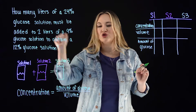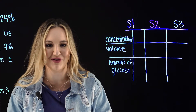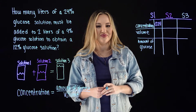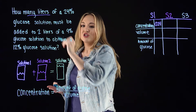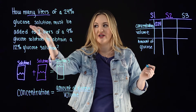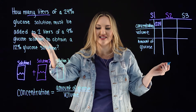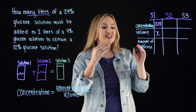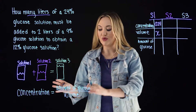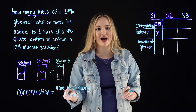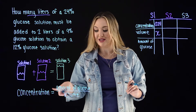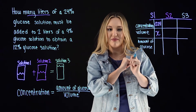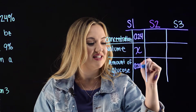For solution one, it's a 24% glucose solution, so 24% as a decimal is 0.24. Our question asks how many liters of this 24% glucose solution, which is what we're trying to find — so let's assign the volume a value of x. The amount of glucose for solution one comes from rearranging the equation: amount equals concentration times volume, so that's 0.24 times x.